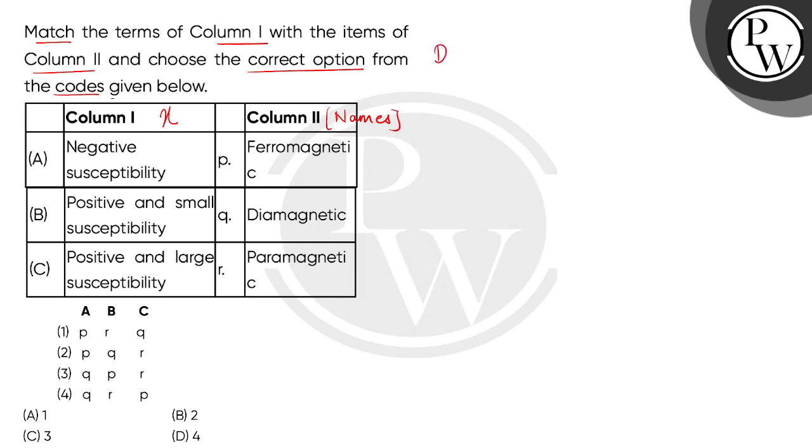Children, we have three types of substances: first is diamagnetic, second is paramagnetic, and third is ferromagnetic substances. Now, if we place these three substances respectively in an external magnetic field, diamagnetic substances will show weakly repulsion and paramagnetic substances will show weakly attraction towards the external magnetic field. And children, ferromagnetic substances will show strong attraction to the external magnetic field.